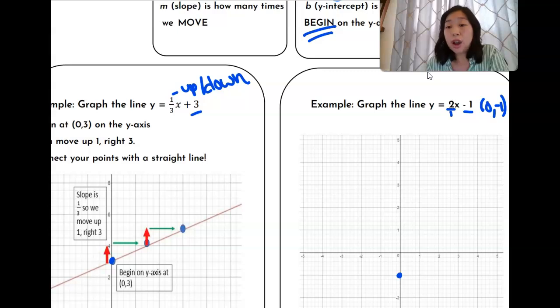Then this tells me since there's no denominator we know that it is an imaginary one. This tells me I'm going to move up two to the right one. Okay, so let's move up two to the right one up two to the right one and then we're going to connect our line just like that.